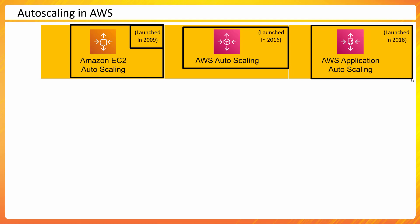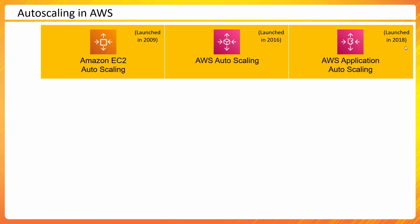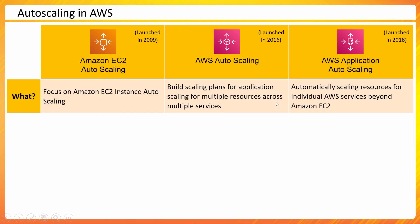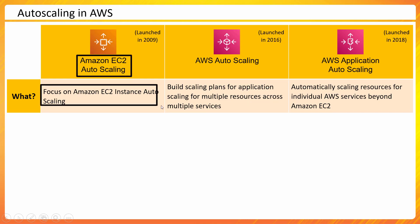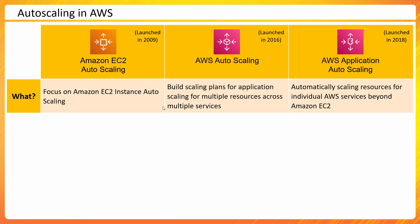Let's talk about what these are at a high level. The first one, Amazon EC2 Auto Scaling, should be very clear because it focuses specifically on Amazon EC2 — adding and removing instances based on conditions you define. Now, what is AWS Auto Scaling?